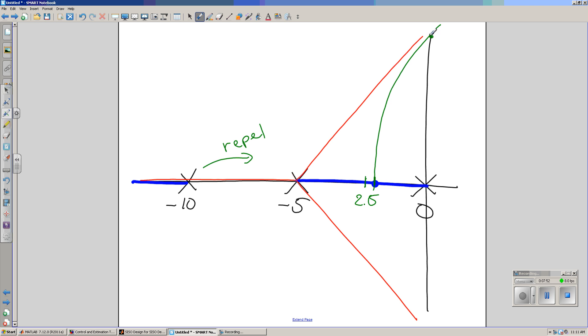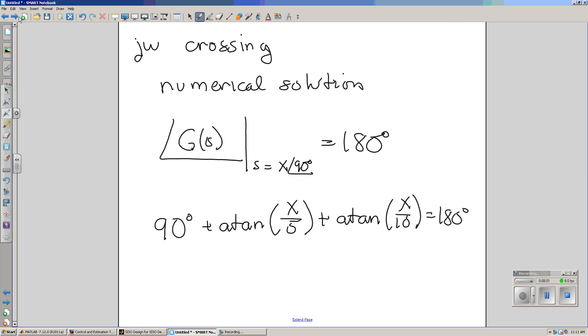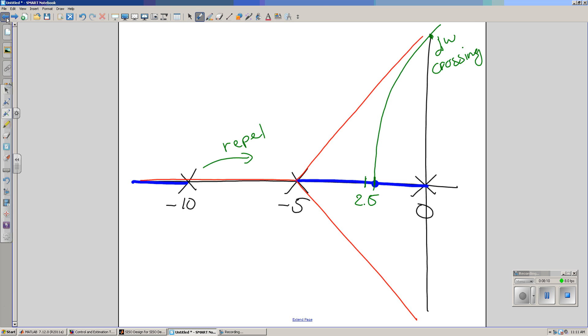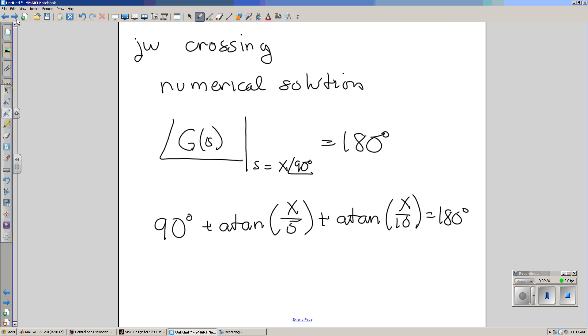This is another useful point to find in sketching the root locus. That's the j omega crossing. J omega crossing has no hard solution, numerical solution. You have to find it numerically. Essentially what you're doing is angles have to add up to 180. Meaning that this angle, 90 degrees, plus this angle, plus this angle, has to add up to 180.